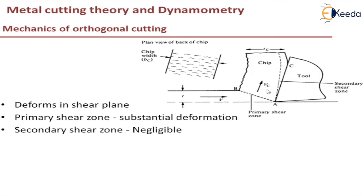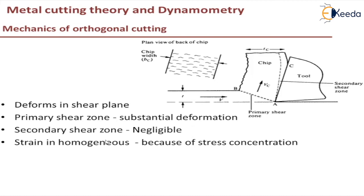The motion of the chip along the tool face is considered to be similar to that of a friction slider with a constant coefficient from A to C. It is assumed to have a constant coefficient. The back of a chip is rough due to strain inhomogeneity — that is, the material is not deforming equally. The strain is high at one region and less at another.